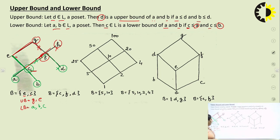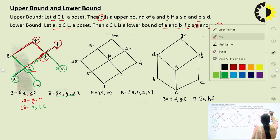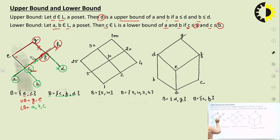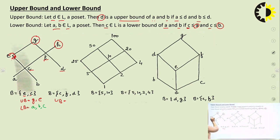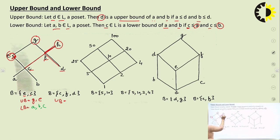Now checking another subset {C, F, D}. For the upper bound of C, F, and D, we find candidate elements G, H, and E. We check H: C is related to H — yes. F is related to H — yes. D is related to H — yes. So H is in the upper bound of {C, F, D}.